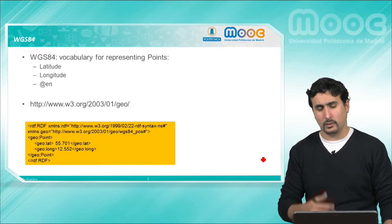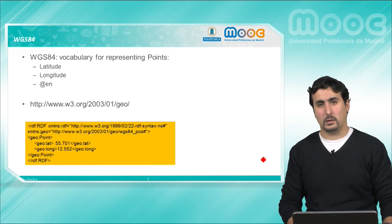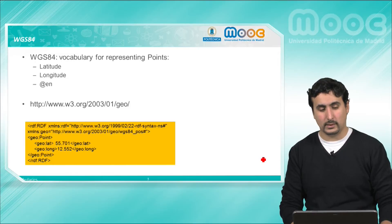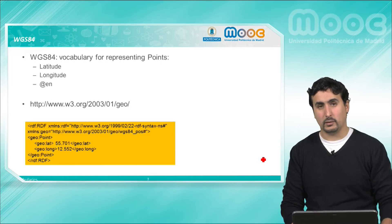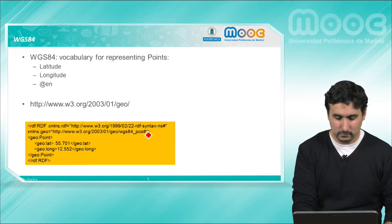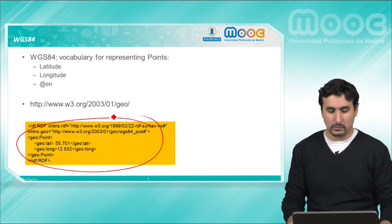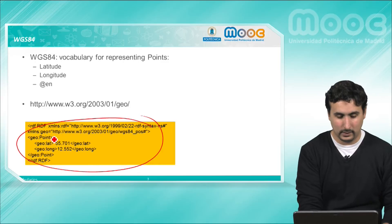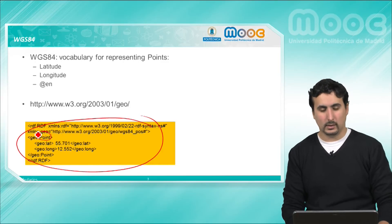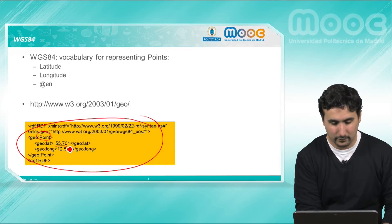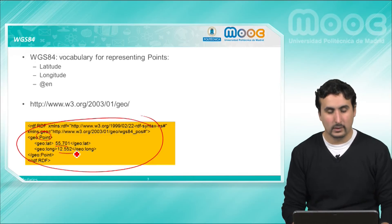Precisely for that, for representing information about points, we have vocabularies such as WGS84, in which we have the concept of a point which has a property for the latitude and for the longitude. As we see here, a point in this vocabulary is just an instance of the point class with a number for the latitude and a number for the longitude.